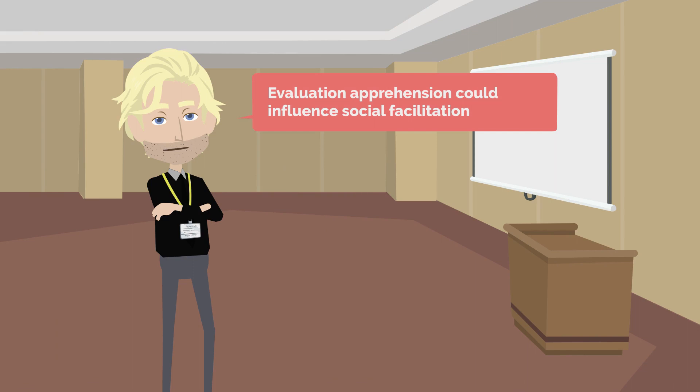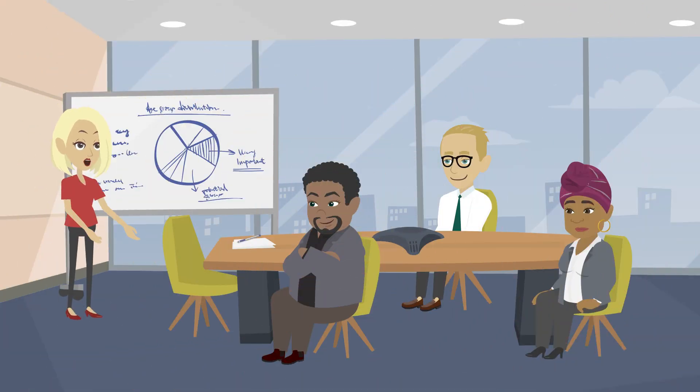Zajonc argued that while evaluation apprehension could influence social facilitation, it wasn't necessary for it to occur. He maintained that the mere presence of others could be enough to cause increased arousal, and thus, social facilitation.